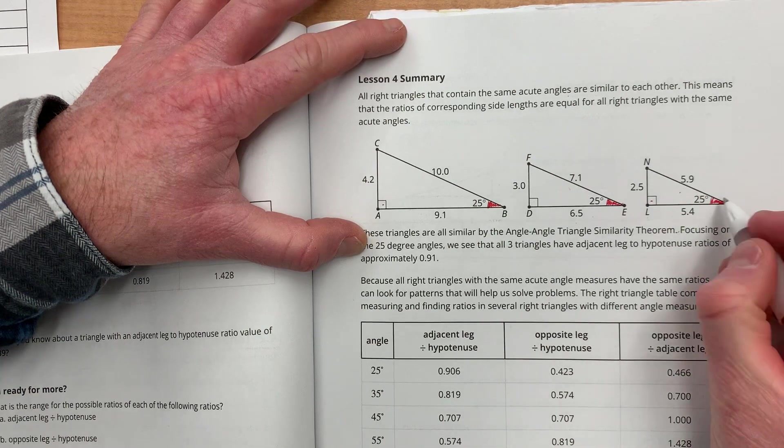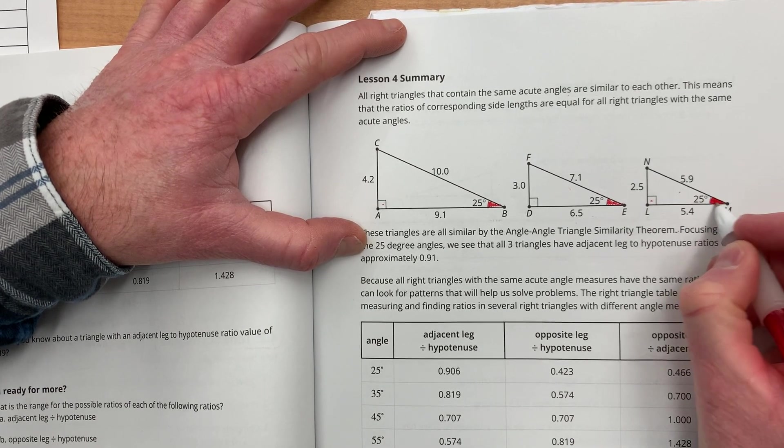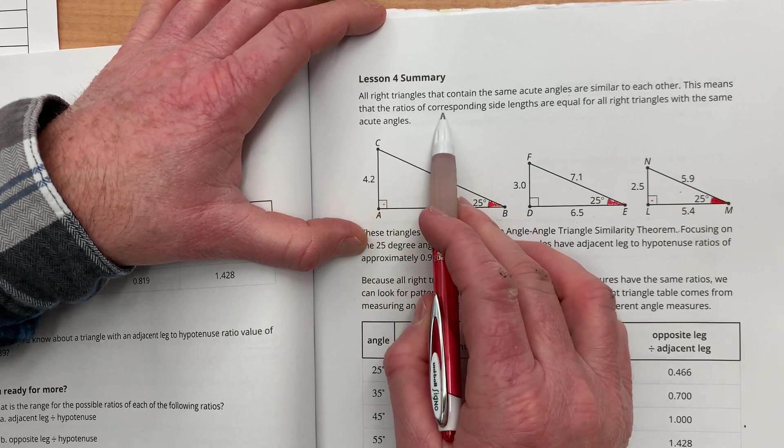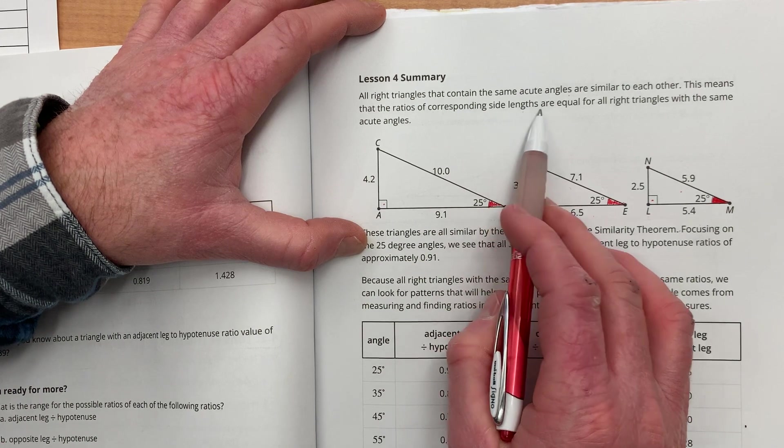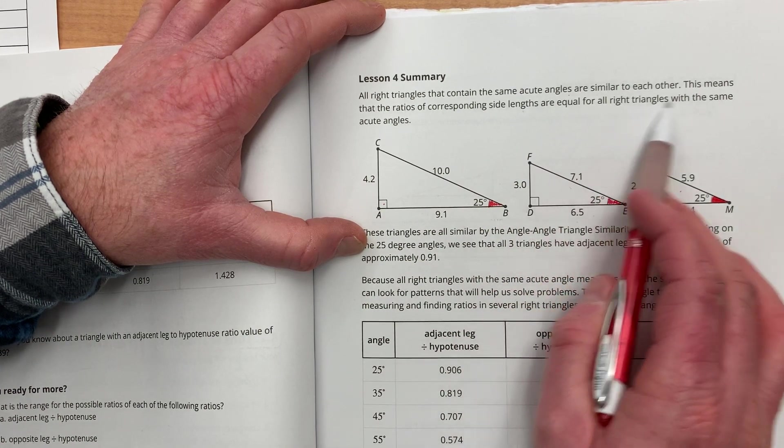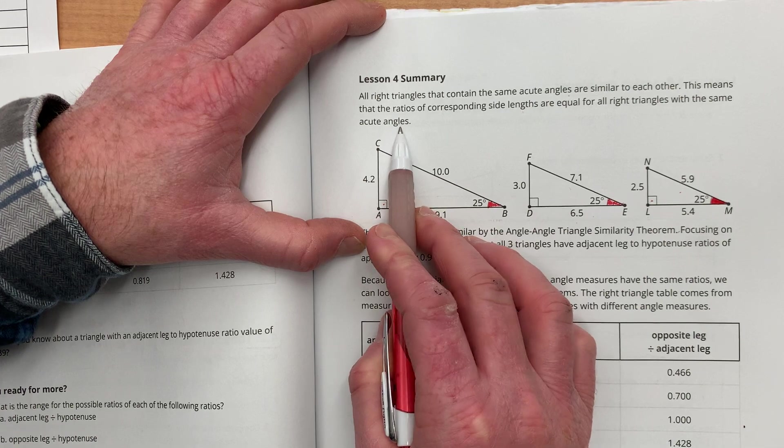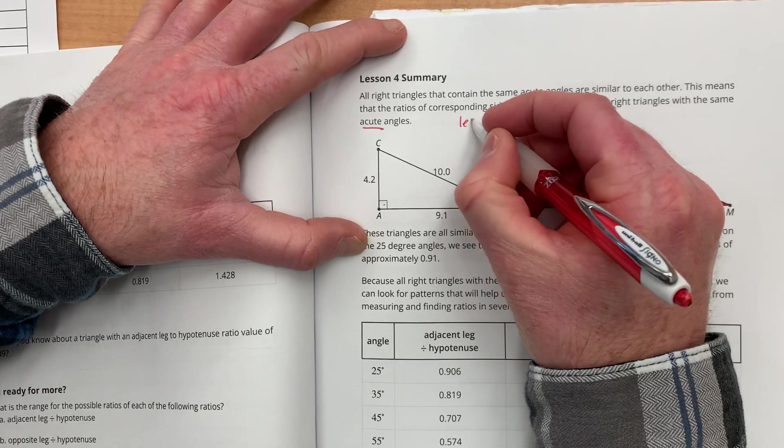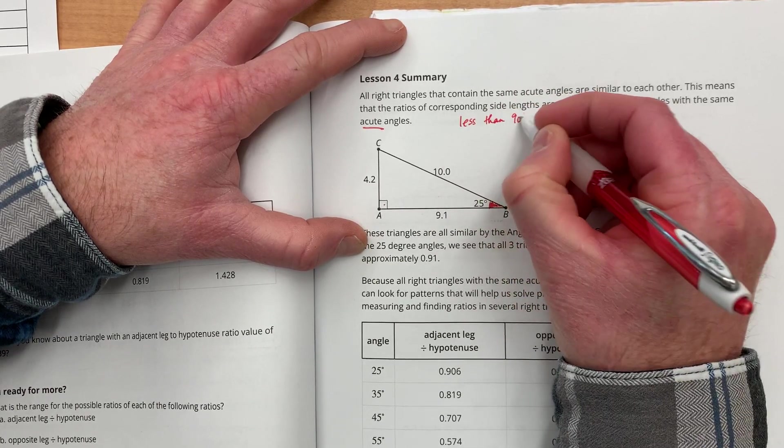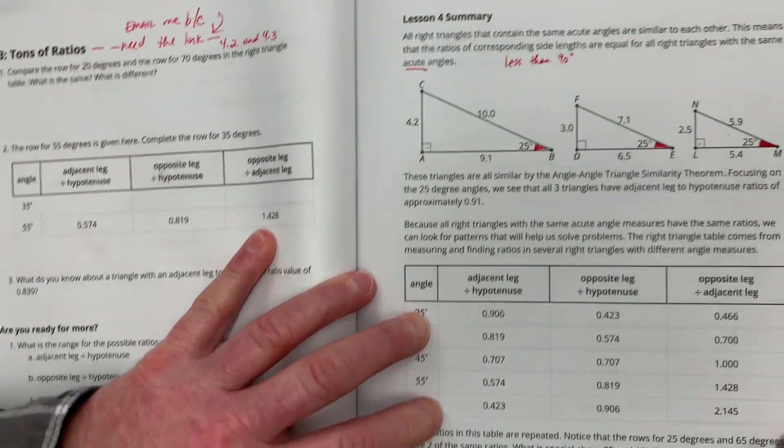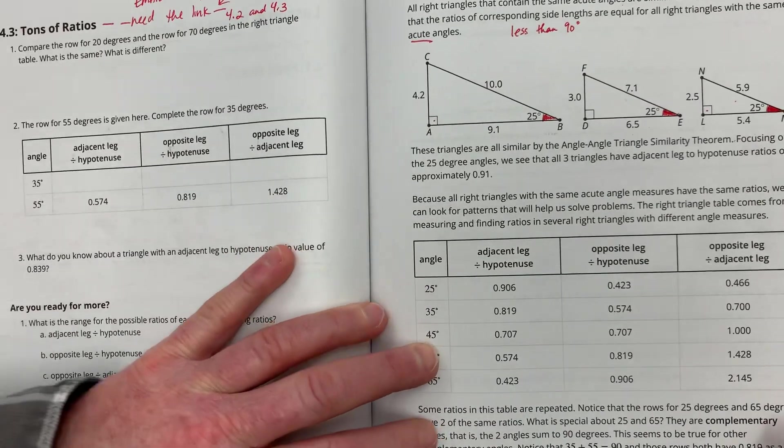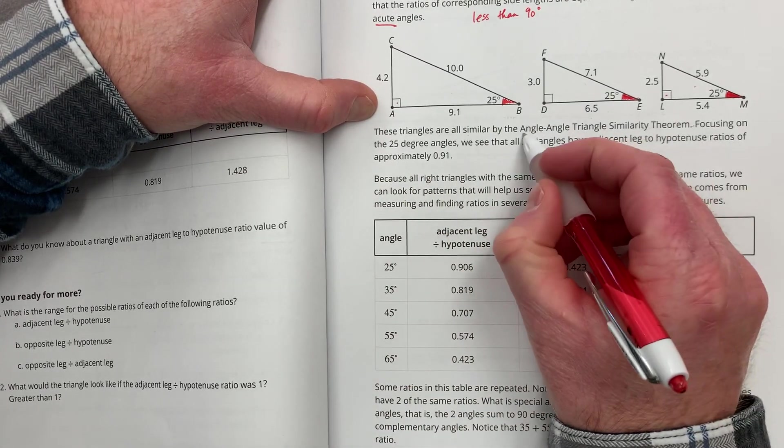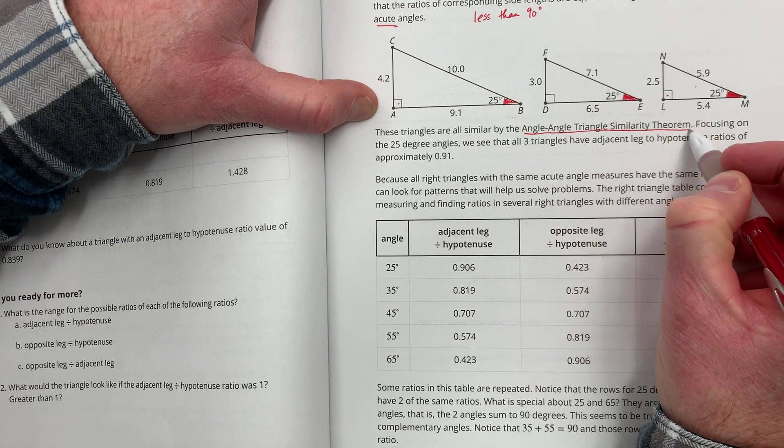Why is that? Well, that's the angle-angle-triangle similarity theorem. So, this means that the ratios of corresponding side lengths are equal for all right triangles with the same acute angles. What's an acute angle? That's anything less than 90 degrees. So, it's an interesting phenomenon. Now, these triangles are all similar by the angle-angle-triangle similarity theorem.